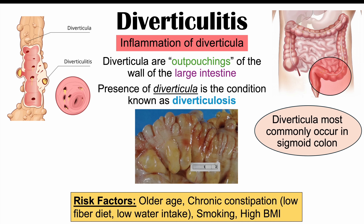One important risk factor is older age, especially over 60. As we get older, the large intestinal wall becomes weaker over time, giving more chances for bulges to form. Chronic constipation is also a key risk factor. Long-term low-fiber diets or low water intake leads to chronic constipation, putting a lot of pressure inside the large intestine, which weakens the bowel wall and leads to these bulges.